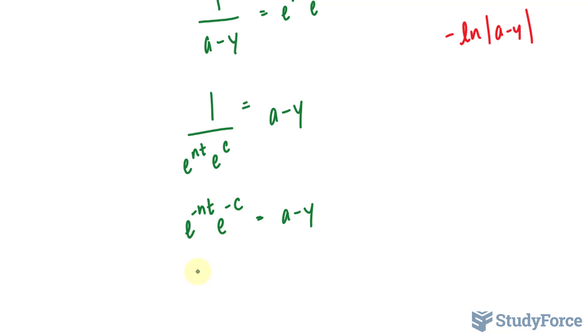And the left side simplifies to c1. I don't want to write down e to the power of negative c. This is our constant. So this is another version of our constant, which I'll call c subscript 1. And this part remains the way it is, as e to the power of negative nt is equal to a minus y.